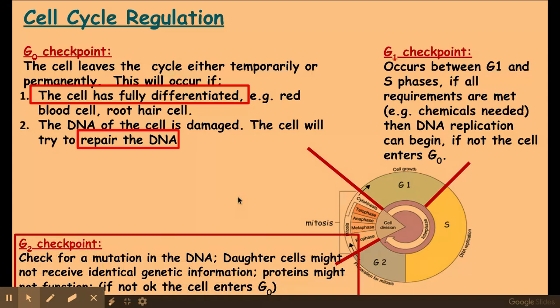We have a G2 checkpoint and this is where it would check for any DNA mutations that have occurred within the S phase. It's really important that the daughter cells receive this genetically identical information. It's really important that they receive this so that the proteins will function.